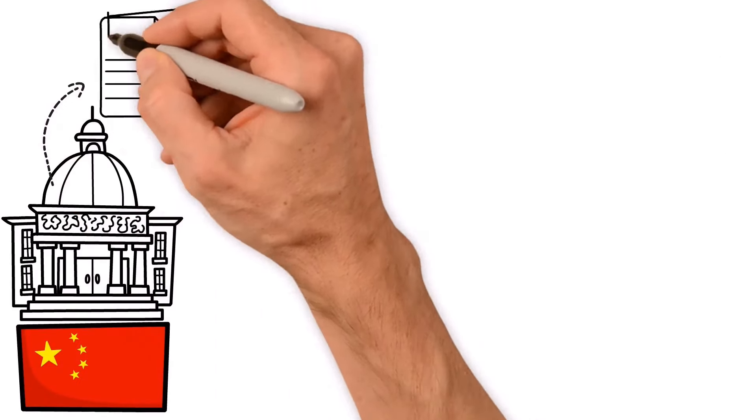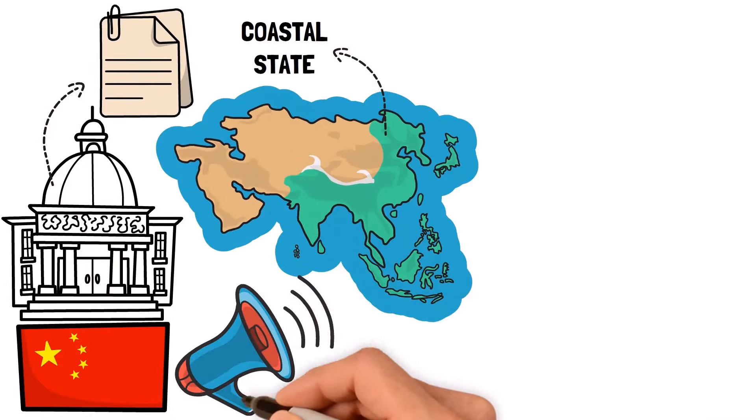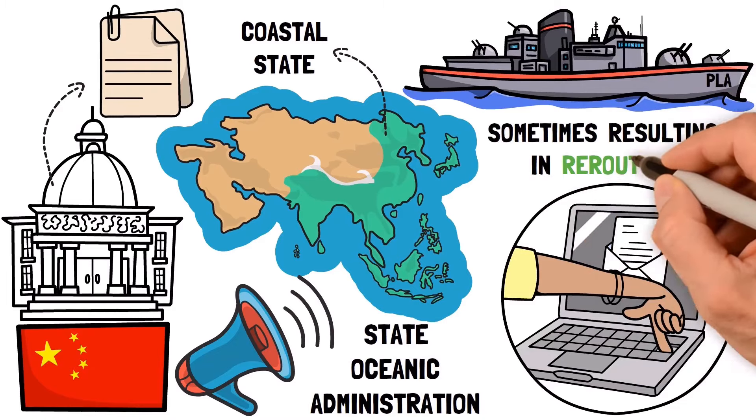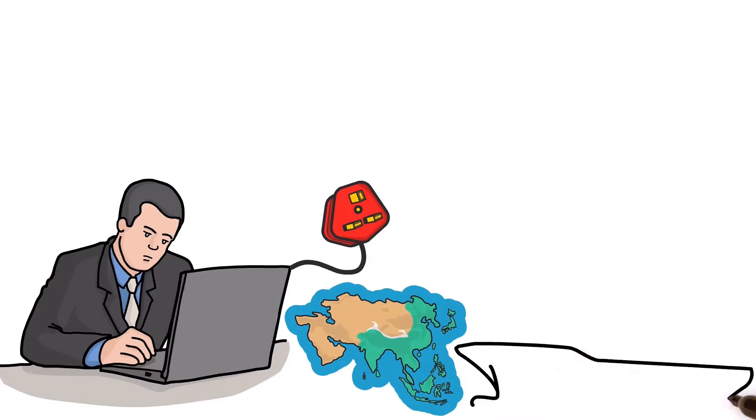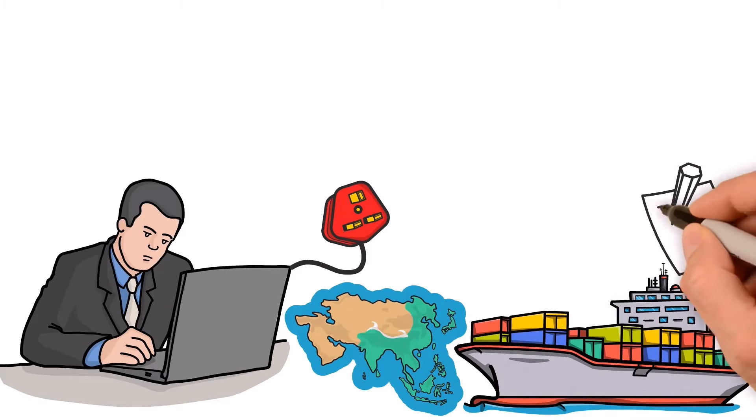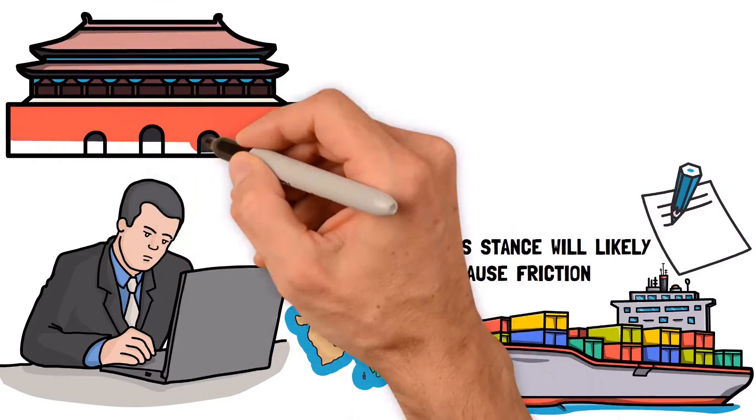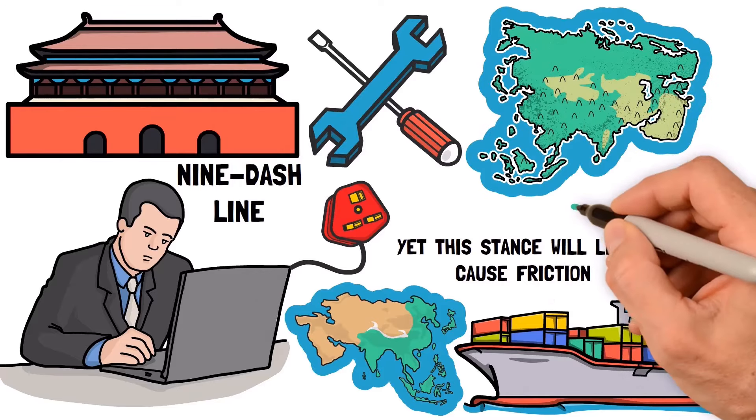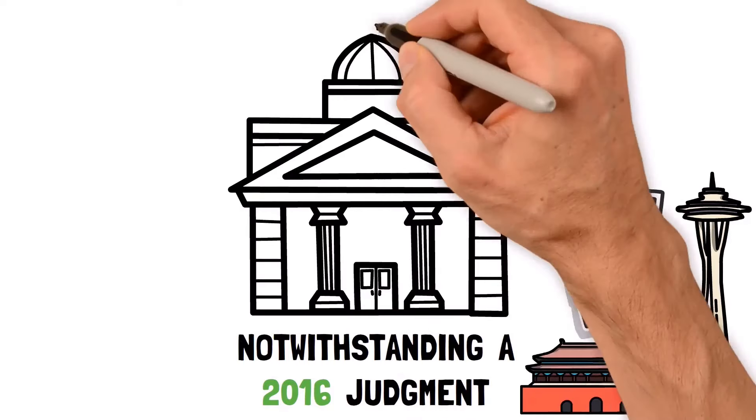China insists that the right to delineate cable routes across continental shelves rests with the coastal state. In practice this means notifying the State Oceanic Administration and obtaining a letter of non-objection from the PLA Navy, sometimes resulting in rerouting. Only then can an operator apply for permission to land their cables on Chinese territory. Thereafter they must keep maritime authorities fully informed of their activities. Yet this stance will likely cause friction, especially since Beijing argues that operators working within the Nine Dash Line, a purportedly historical claim to nearly the entire South China Sea, must seek its consent. Both Beijing and Taipei claim Chinese sovereignty over the sea notwithstanding a 2016 judgment at the Permanent Court of Arbitration finding it unlawful.